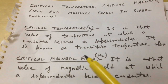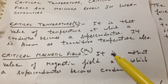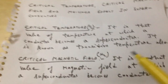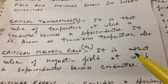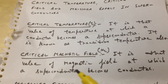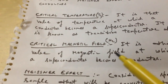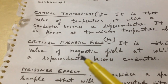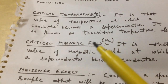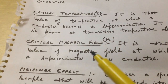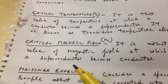Now let us discuss the critical magnetic field, denoted by H_C. It is that value of magnetic field at which a superconductor becomes a conductor. Now that we have discussed critical temperature and critical magnetic field, let us discuss the main effect — the Meissner effect.